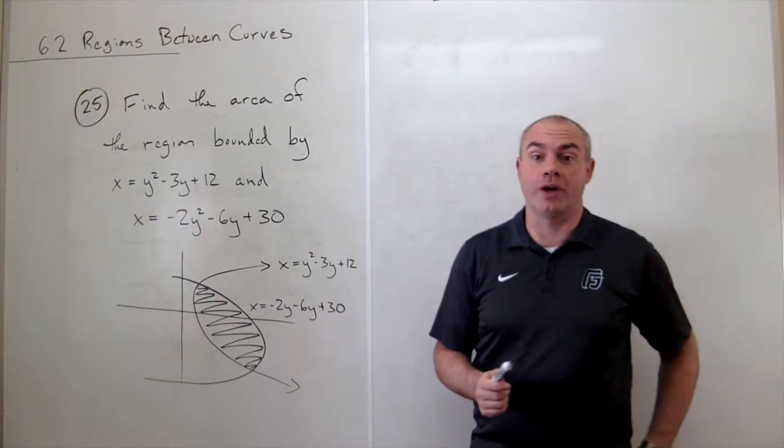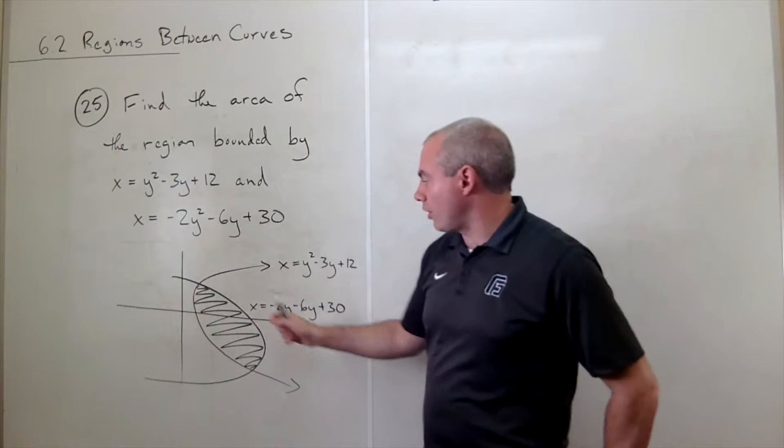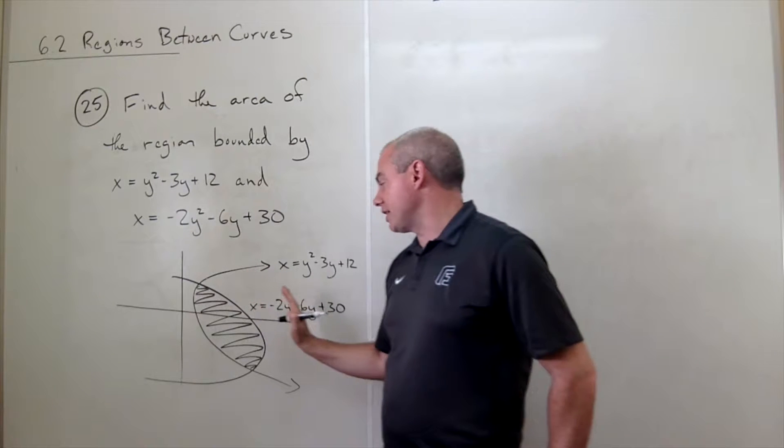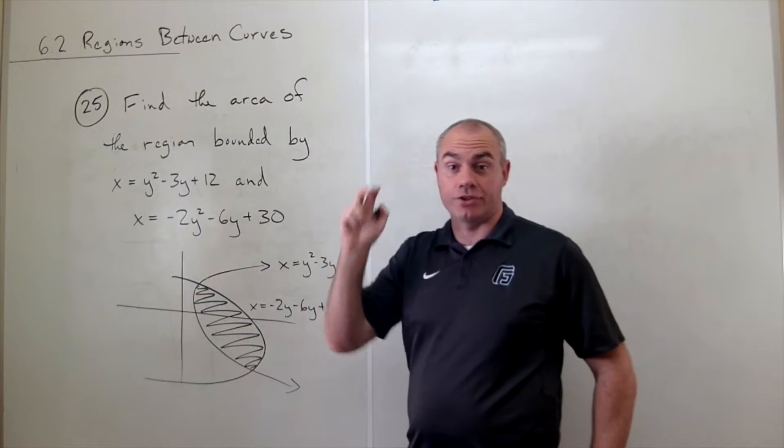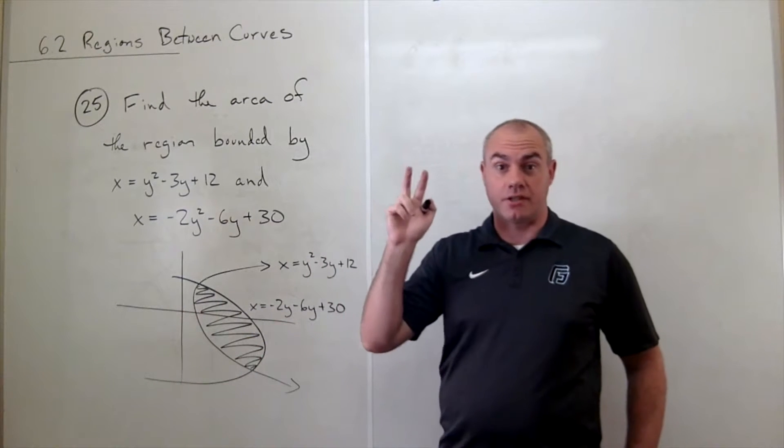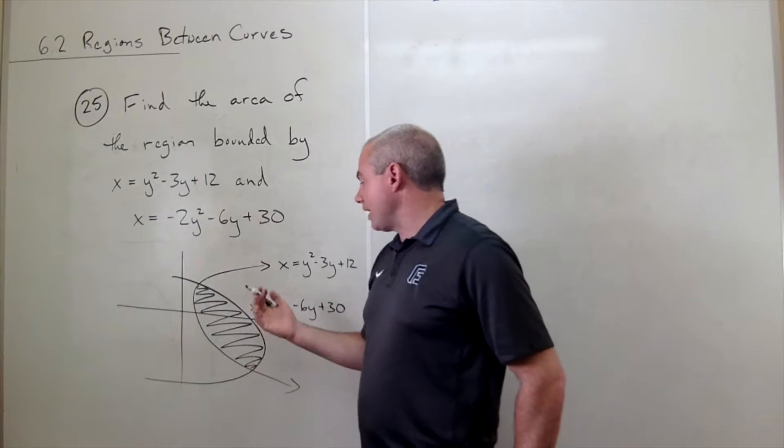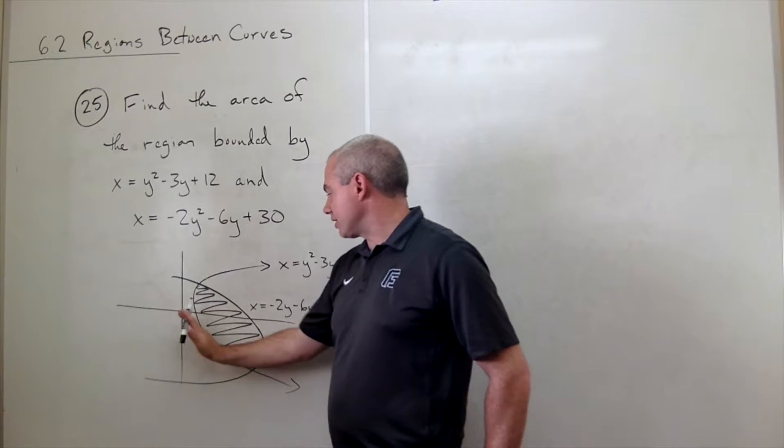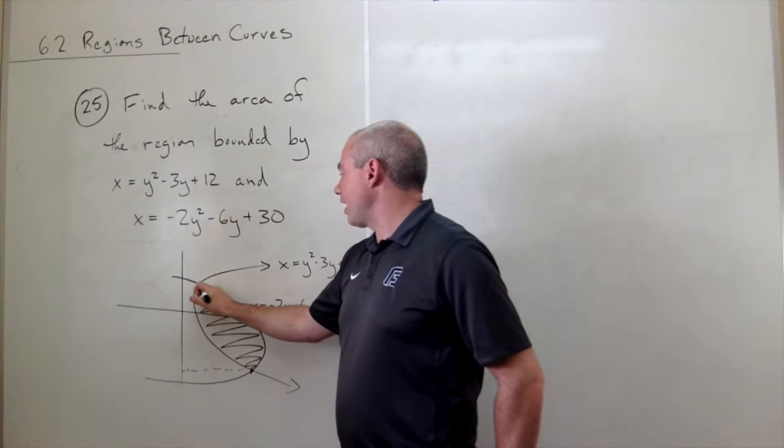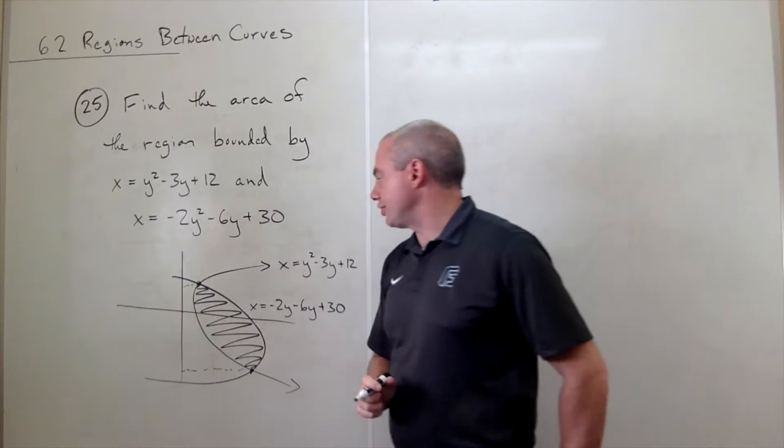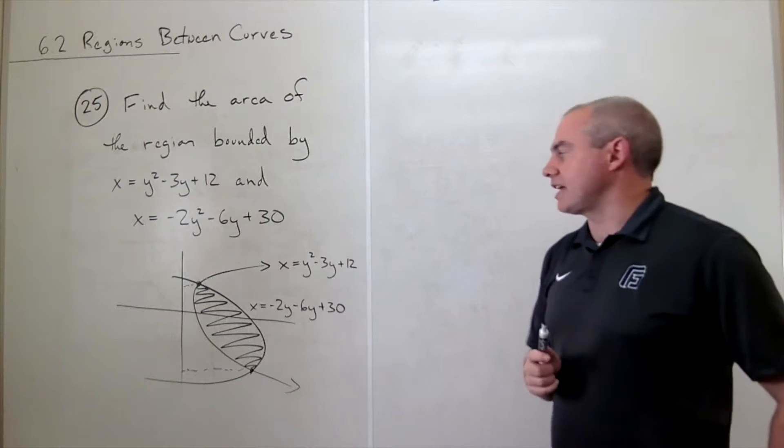If I want to evaluate the area that's trapped between the two parabolas, then I need to know, first of all, we can see that there's a rightmost function, or a top function, and there's a leftmost function, which is the bottom function. What y value do I start at, and what y value do I end my integration at? This one, I'm not just going to eyeball it. I think that I'm actually going to set these two guys equal to each other and solve for y.